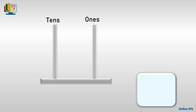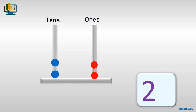Now let's see what's next. Let's count the beads on the tens rod: one, two — we have two beads on the tens rod. How many beads are there on the ones rod? One, two — two beads on the ones rod as well. Two tens and two ones. What number is the abacus showing? Well done — it shows twenty-two.